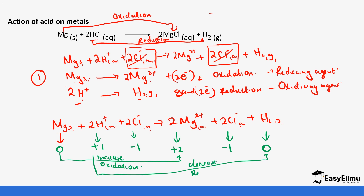That is how we use both loss and gain of electrons, and increase and decrease in oxidation number, to confirm a reaction is a redox reaction. You will be required to show these workings, especially if you are asked to identify the oxidizing and reducing species in an equation. You must show either an increase or decrease in oxidation number, or loss and gain of electrons.